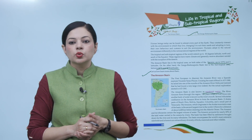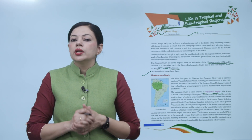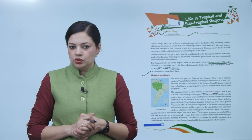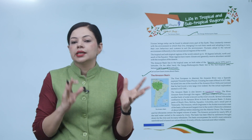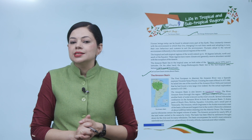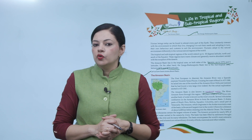The river Amazon flows through this region and the place where a river flows into another body of water is known as the river's mouth. Several tributaries confluence on the Amazon River to form the Amazon Basin. It covers parts of Brazil, Peru, Bolivia, Ecuador, Colombia and a small part of Venezuela.